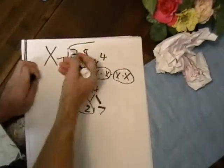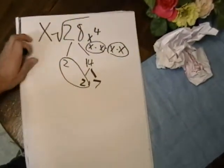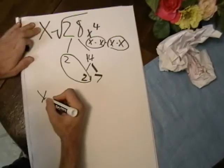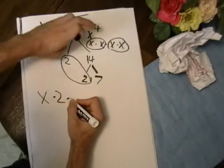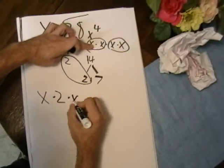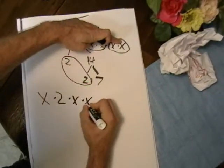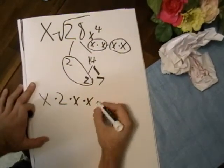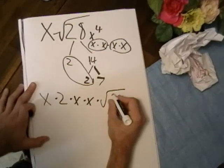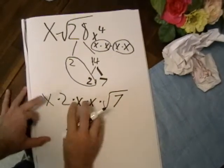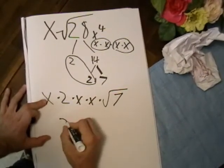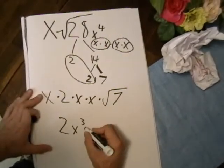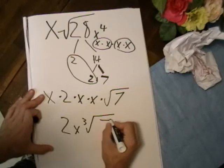So it will stay inside the radical. So we know that our expression is now going to have x from the coefficient times 2 times x times x. Then it will also be multiplied by the square root of 7. So we will have 2x cubed, due to the fact that there are 3 x's, square root of 7.